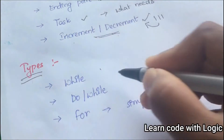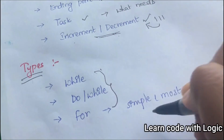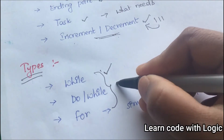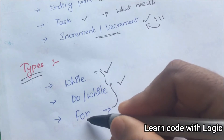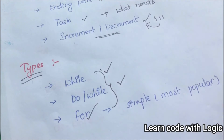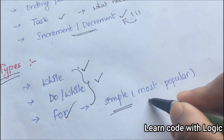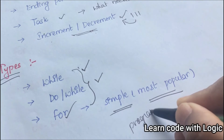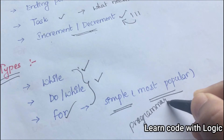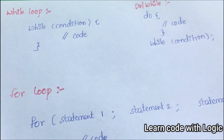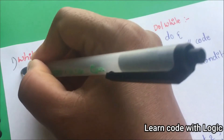There are three types of loops in Java. The first one is the while loop, the second one is the do-while loop, and the third one is the for loop. The for loop is very simple and handy, and we can observe that most programmers use it. Now let's talk about the types of loops one by one.